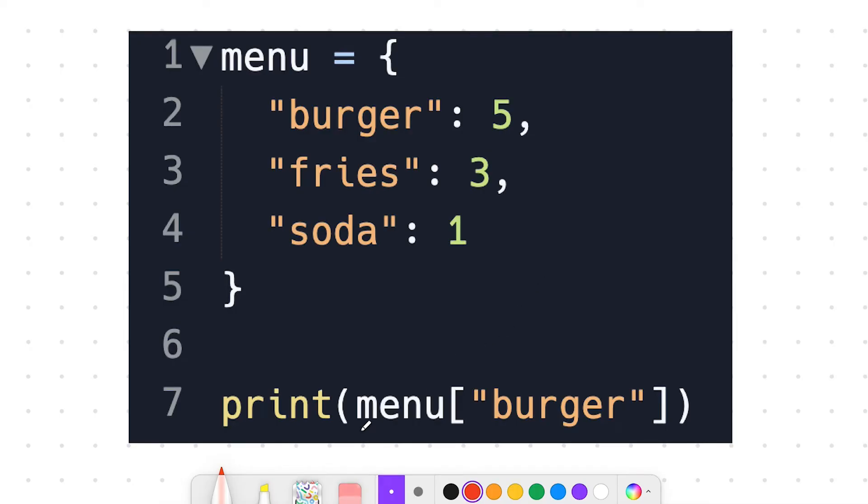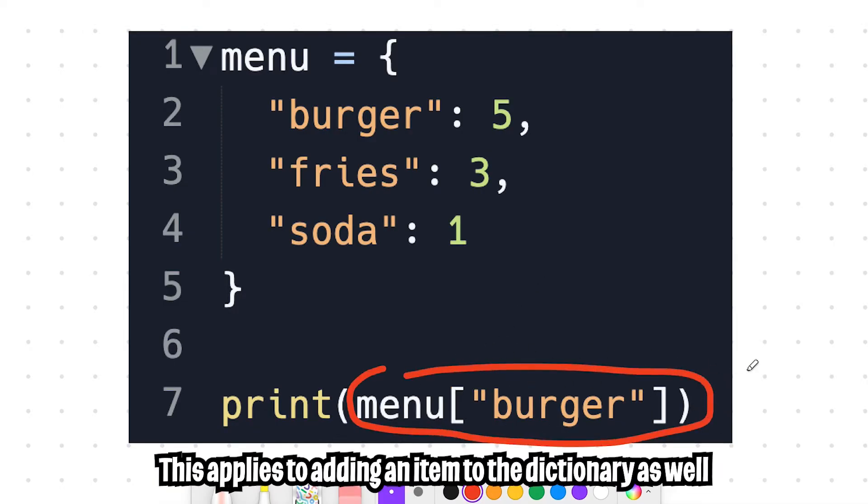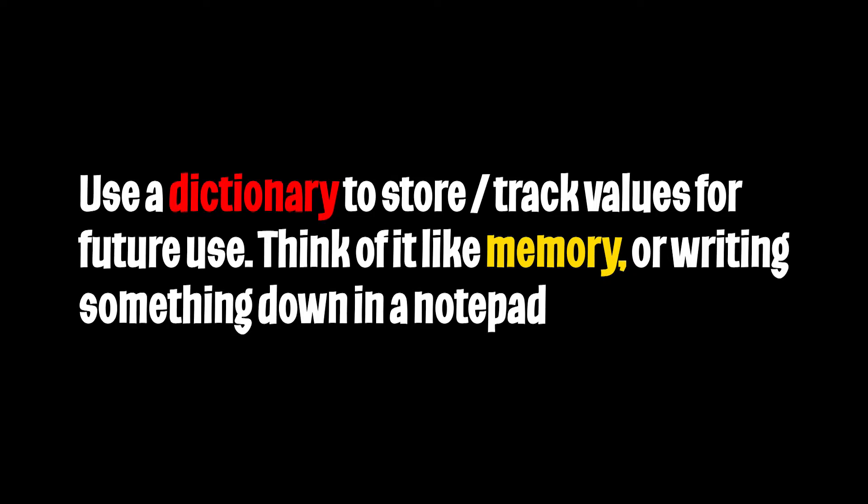So what makes a dictionary so powerful is that to access an item inside the menu, the runtime is big O of one, which is basically constant. And that is super fast. And in general, a dictionary is usually used to store some values that we want to use in the future.